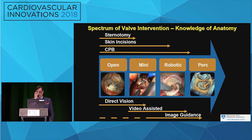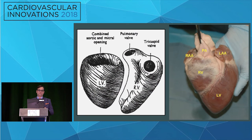On the spectrum of heart valve intervention — this shows mitral intervention but it applies to tricuspid as well — we are becoming more and more percutaneous. As we become more percutaneous in our approach, image guidance becomes even more critical. Our planning and our knowledge of anatomy become more critical to our ability to achieve successful outcomes.